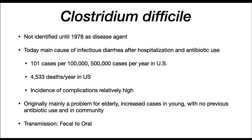Clostridium difficile is probably the most important from a medical perspective. It was not identified until 1978 as a disease agent. Today, it is the main cause of infectious diarrhea after hospitalization and antibiotic use. There are 101 cases per 100,000, and it's estimated there are 500,000 cases of C. difficile per year in the U.S. 4,533 deaths per year are also reported in the United States.